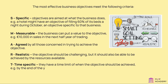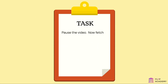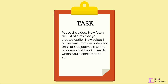For example, by the end of the year. Task: pause the video. Now fetch the list of aims that you created earlier. Select one of the aims from your notes and think of three objectives that the business could work towards which would contribute to achieving that aim. Don't forget — your objectives should be SMART.